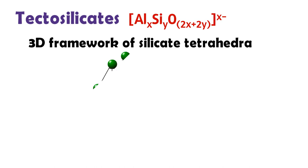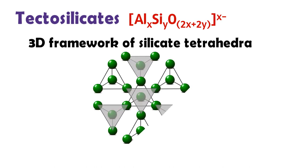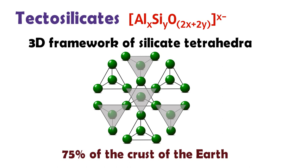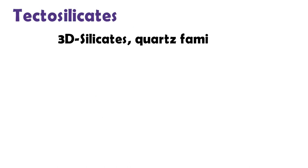Tectosilicate have a three-dimensional framework of silicate tetrahedra with SiO₂. This group consists of nearly 75% of the crust of the Earth. As tectosilicate, the quartz family includes quartz, chalcedony, and opal.